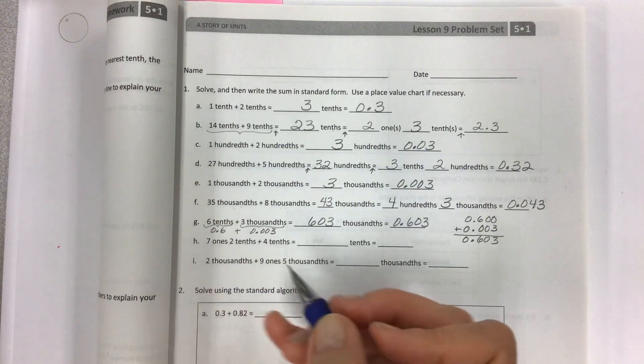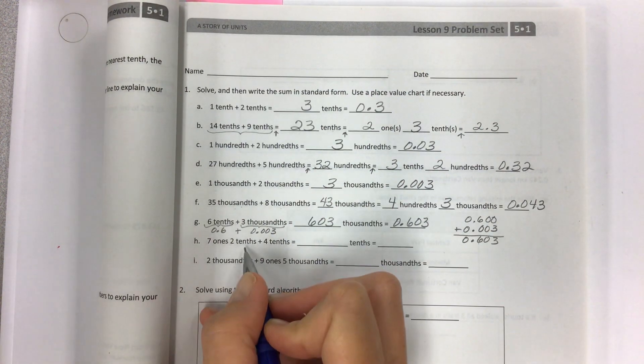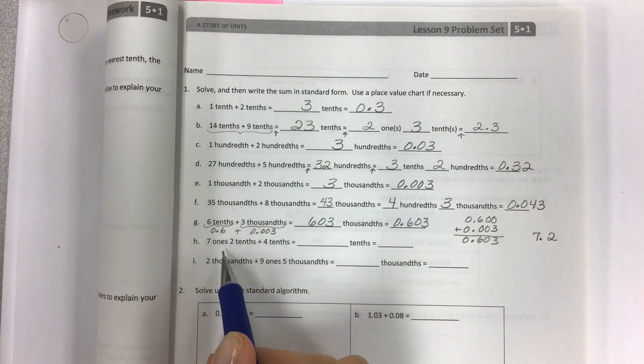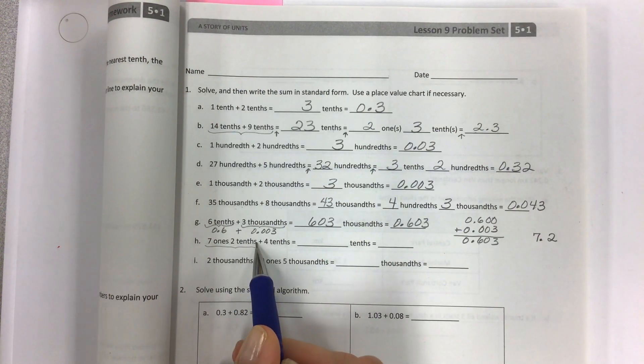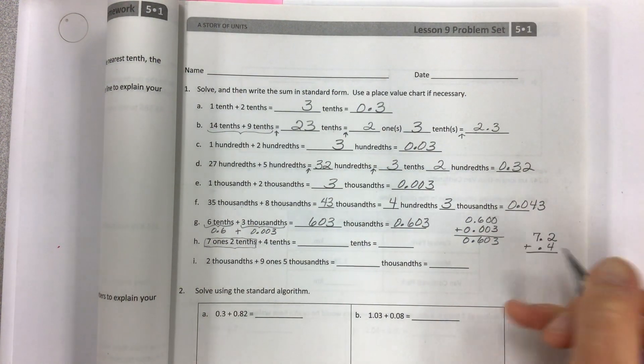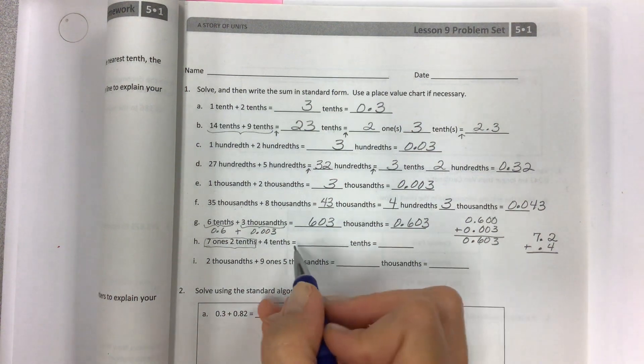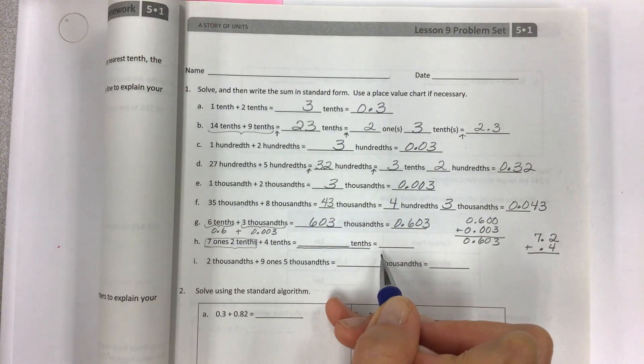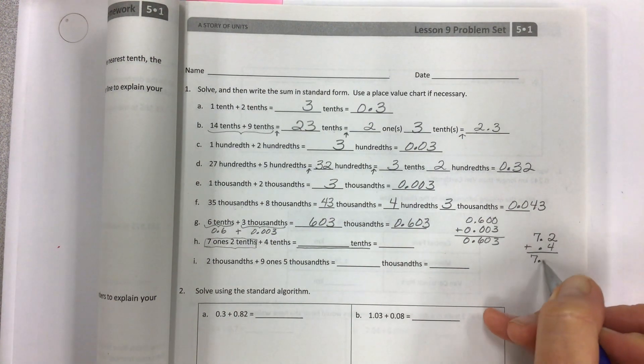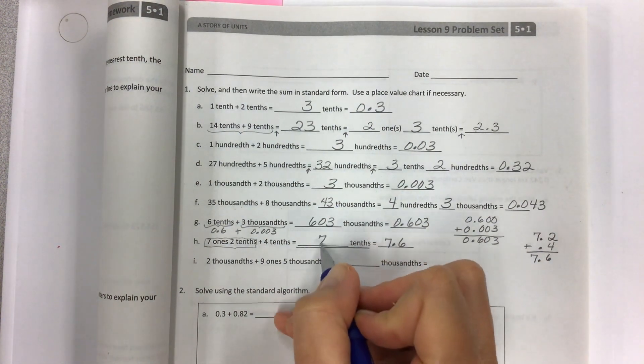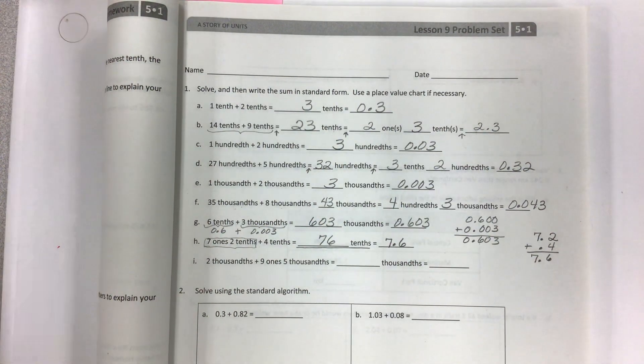Here again, different unit forms: 7 ones and 2 tenths plus 4 tenths. The first thing I would do immediately is write 7 ones and 2 tenths in standard form. Then that is going to help you figure out the total number of tenths. Watch out for the equal sign. They don't want to know the final answer, which is 7.6 or 76 tenths, until this part. So how many tenths is that? It's 76 tenths.